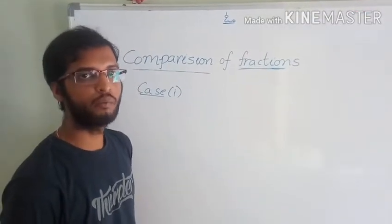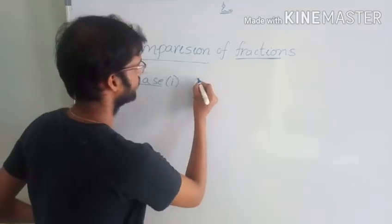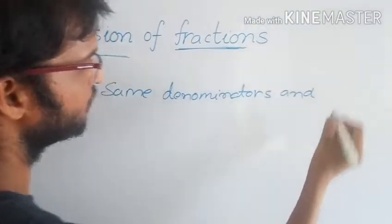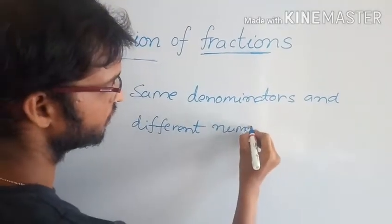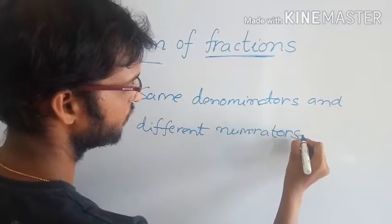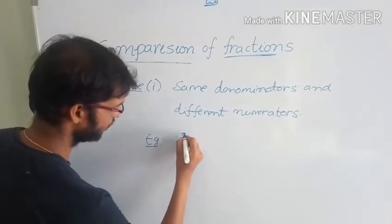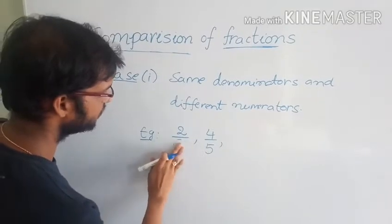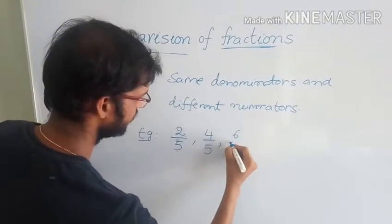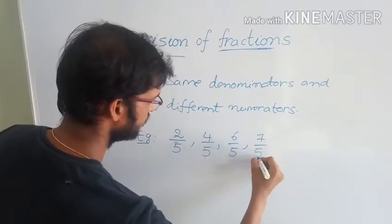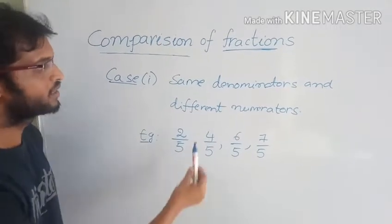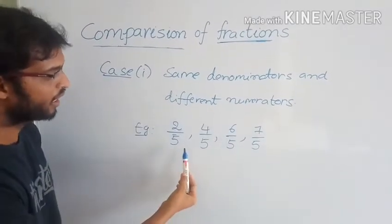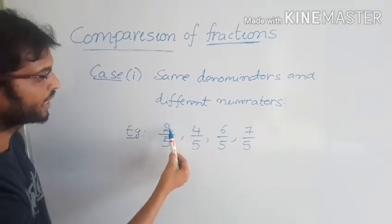Coming to Case 1: same denominators and different numerators. For example, 2 by 5, 4 by 5, 6 by 5, 7 by 5 — observe the same denominator. All denominators have the same value and numerators are different.